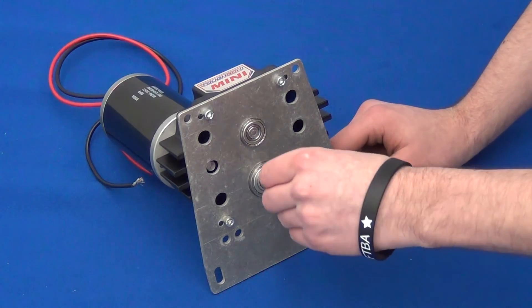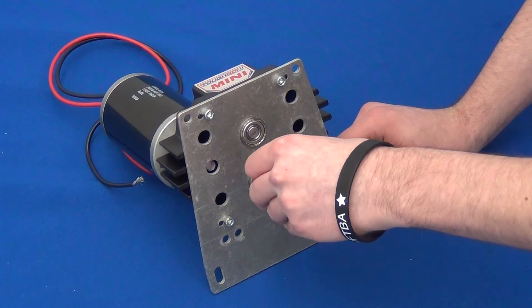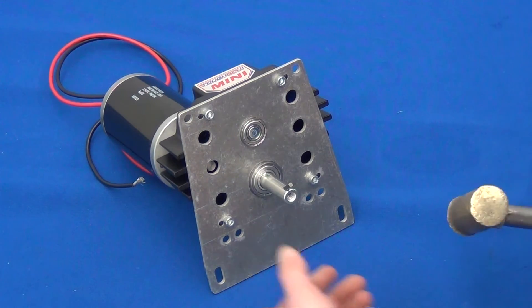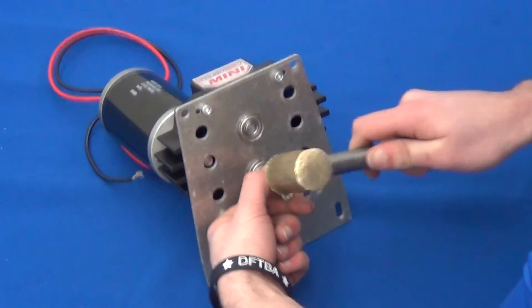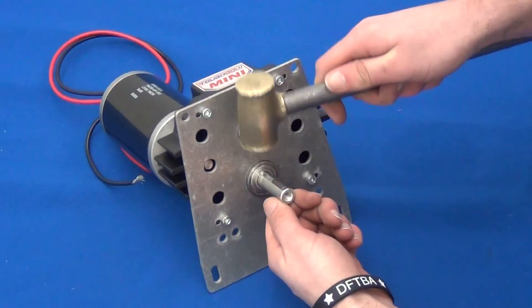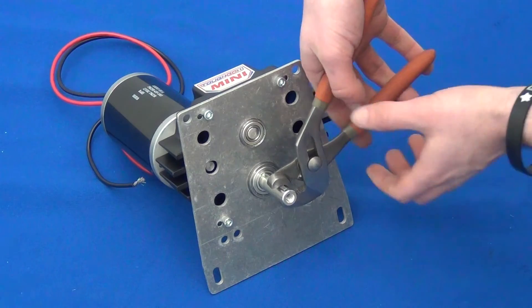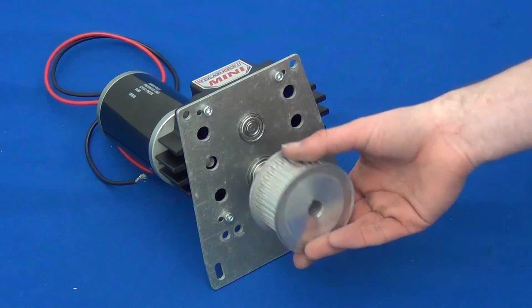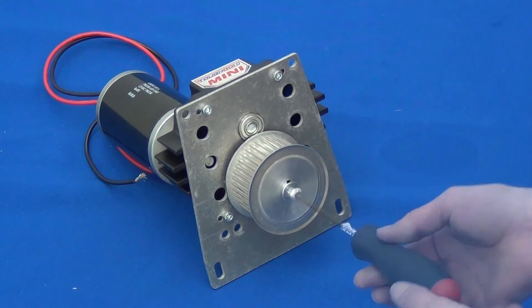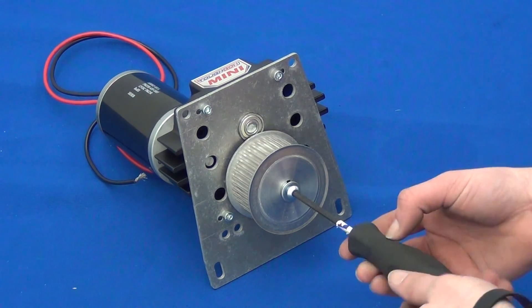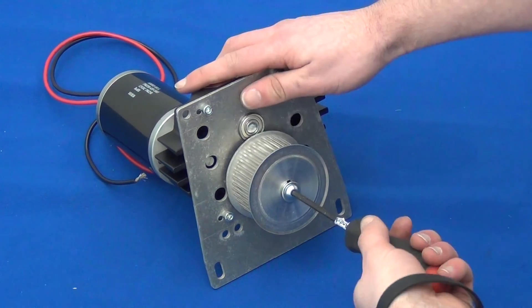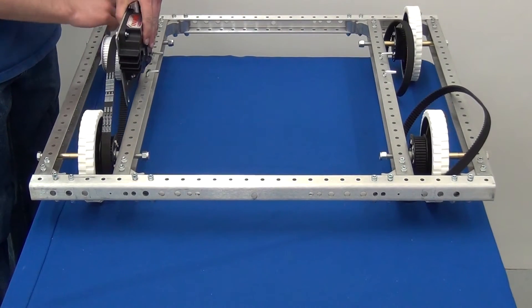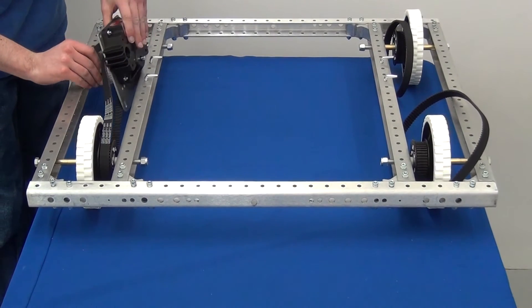Place the large key into the shaft and slide the gearbox pulley on. Use the washer and button head cap screw to secure the pulley. Place the belt from the front wheel on the pulley first, and then the rear belt.